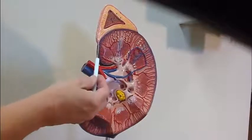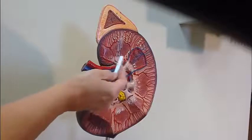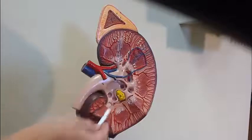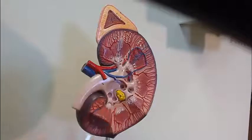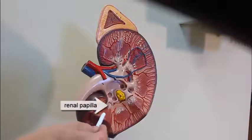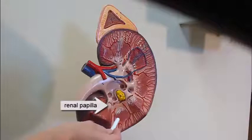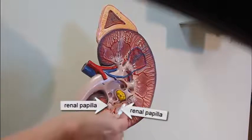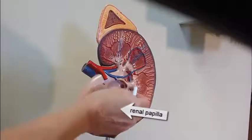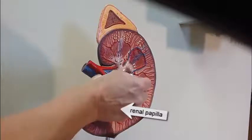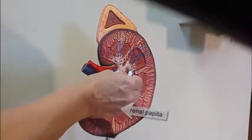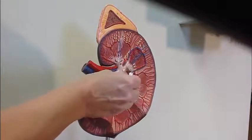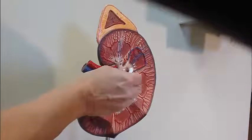Within the renal medulla, we find the renal pyramids, and at the tip of the pyramids — in this lighter color — we have the renal papilla. The renal papilla are collecting from a variety of collecting ducts.